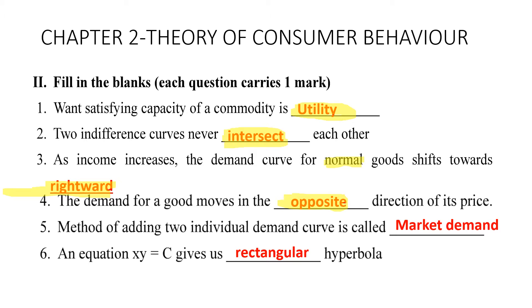Fifth: the method of adding two individual demand curves is called market demand. Sixth: the equation xy = c gives us a rectangular hyperbola.